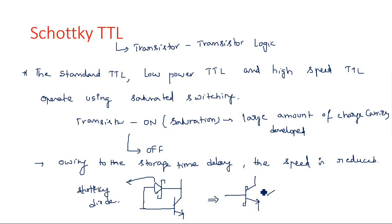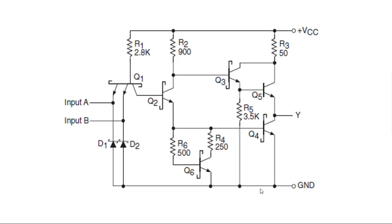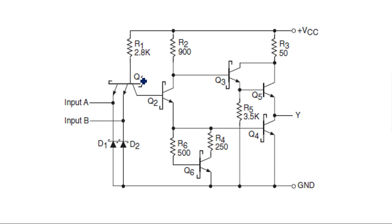In the circuit, we again have a multi-emitter transistor Q1 which is a Schottky transistor. In the previous TTL circuits we used normal BJTs, but here all transistors Q1 to Q5 are Schottky BJTs. These five transistors are normal transistors but additionally have a Schottky diode from base to collector — combined, we represent them as Schottky transistors.